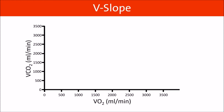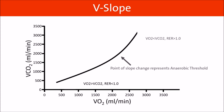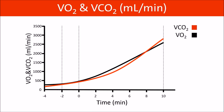Next, let's look at the respiratory exchange ratio, which is the ratio of VCO2 to VO2. Initially, we expect the value to be less than 1, as some of the produced CO2 will remain dissolved in the blood as bicarbonate and not be exhaled. The anaerobic threshold is the point at which the respiratory exchange ratio goes from less than 1 to greater than 1, and usually occurs at 40% of predicted VO2 max. When we plot both VO2 and VCO2 versus time, the anaerobic threshold is when the VCO2 line crosses the VO2 line.